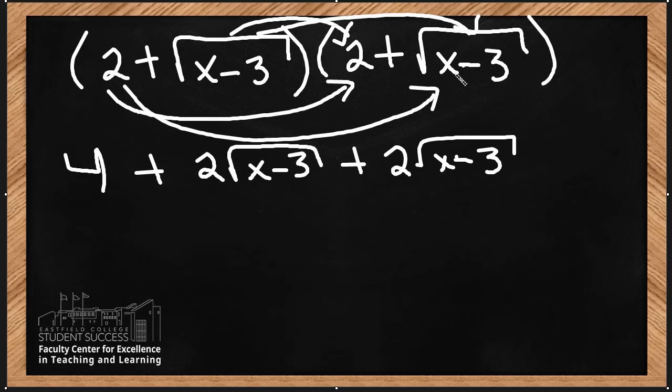Now I'm going to combine like terms here. So 4 and negative 3 become 1. I don't have any common terms with x, and 2 root x minus 3 plus 2 root x minus 3 - since they are the same and I combine them together, I'm going to get 4 root x minus 3.